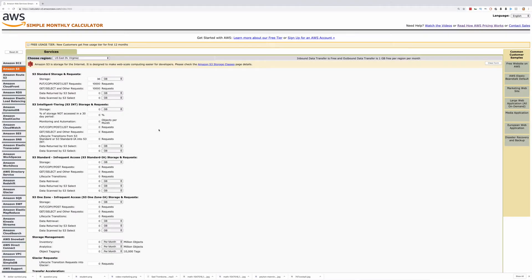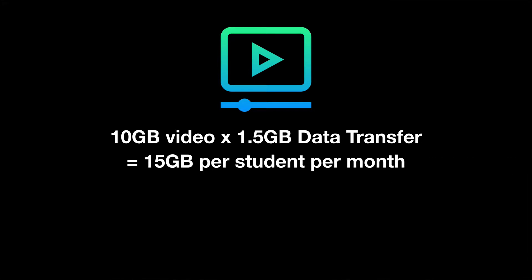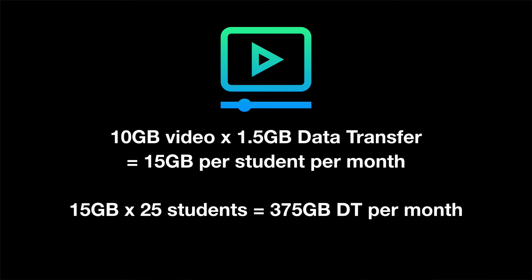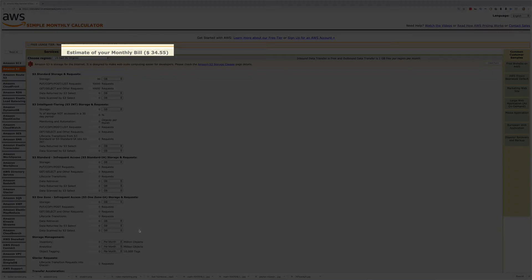Now for the data transfer. Remember, 1080p requires 1.5 gigabytes of data transfer per hour. 10 hours of video at 1.5 gigabytes is equal to 15 gigabytes per student per month. Now we take that number and multiply it by the number of students, which is 25, leaving us with 375 gigabytes of data transfer per month. If we plug that number into our calculator, our monthly price is now $34.55.